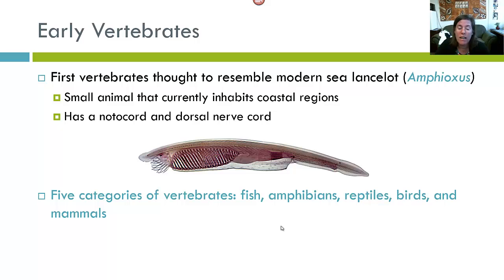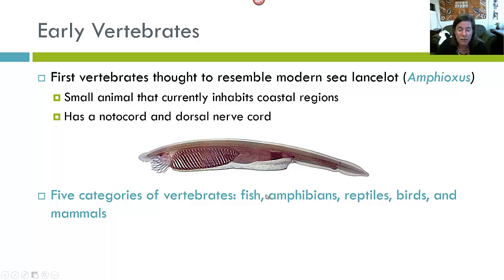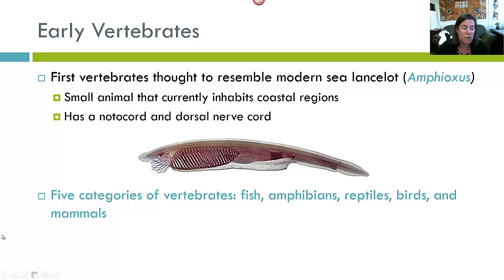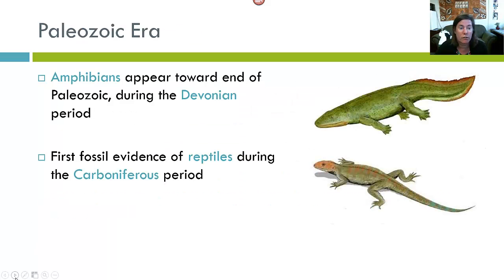There are five main types of vertebrate organisms: fish, amphibians, reptiles, birds, and mammals. There is a relatively complete fossil record for most of these five groups, and the evolutionary relationships between these groups is also relatively well known.